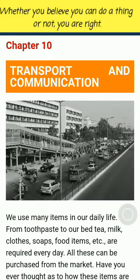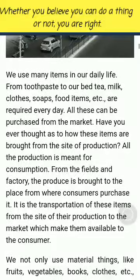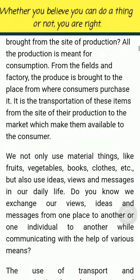Chapter 10: Transport and Communication. We use many items in our daily life — from toothpaste to bed tea, milk, clothes, soaps, food items, etc. — which are required every day. All these can be purchased from the market. Have you ever thought about how these items are brought from the site of production? All production is meant for consumption. From the fields and factory, produce is brought to where consumers can purchase it. It is the transportation of these items from the site of production to the market which makes them available to the consumer.